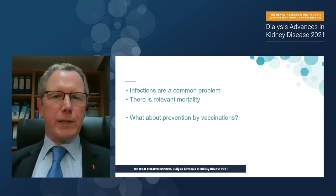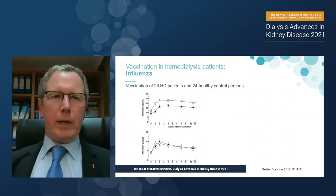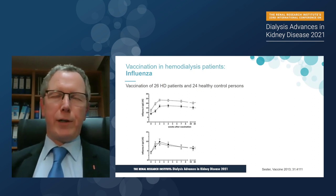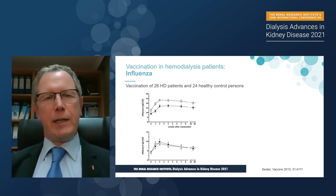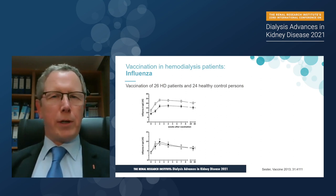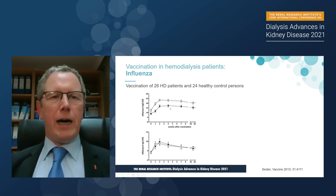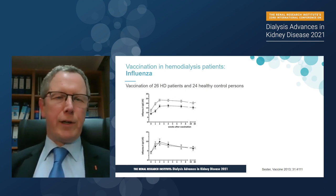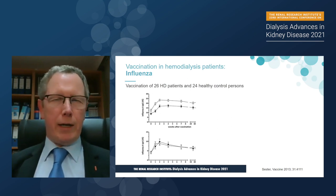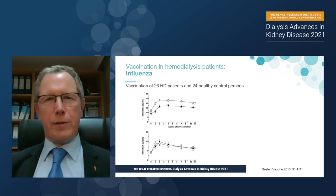So infections are a common problem with relevant mortality in our patients. What about prevention, for instance by vaccinations? One of the vaccinations we deal with every year is influenza. I put out this study here because it points to some very important aspects of influenza immunity after vaccination. You see on top the influenza IgG response in healthy individuals in white and in dialysis patients in black — there is a significant difference with low influenza antibody titers and low persistence of this protective immunity.